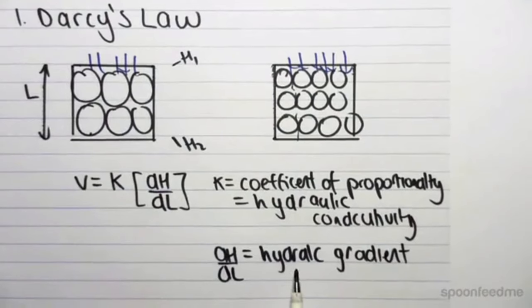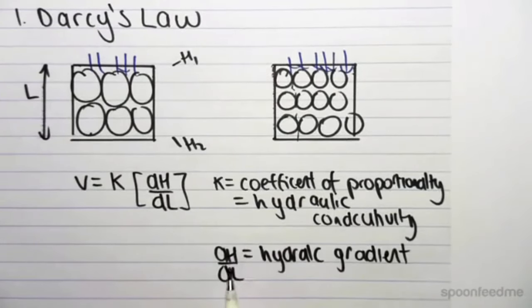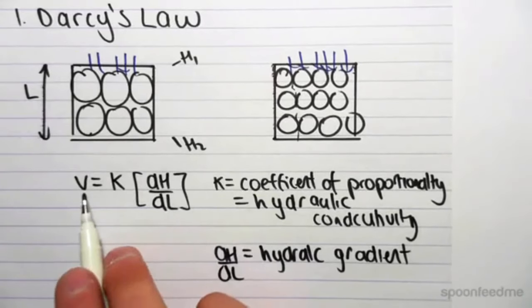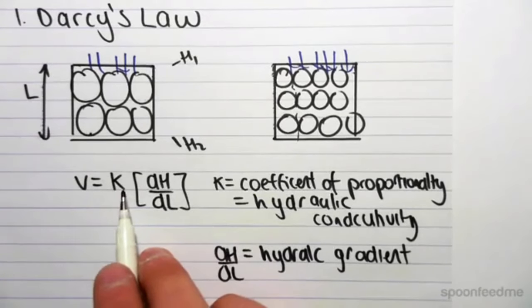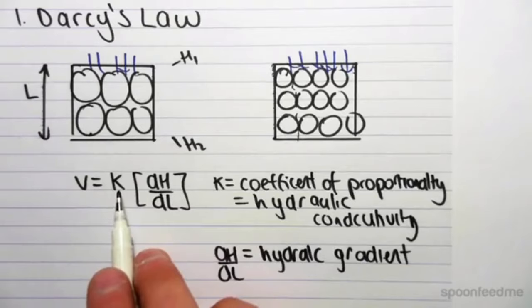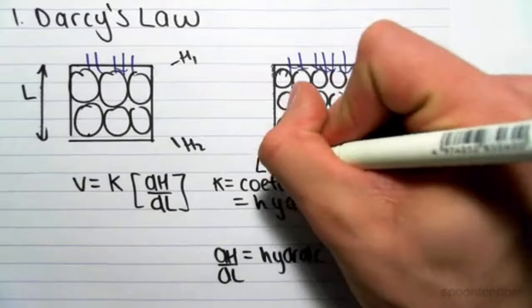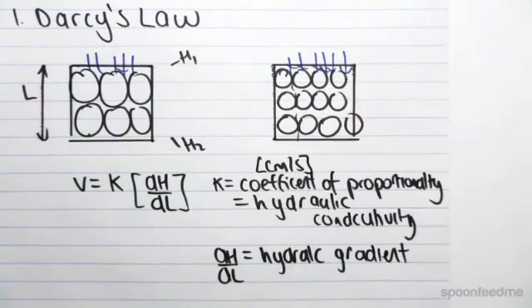Just a note, this hydraulic gradient is actually unitless, because the unit of head is meters and the unit of length is also meters, so that's just going to cancel out. This means that K has to have the same units as velocity, so K is in centimeters per second.